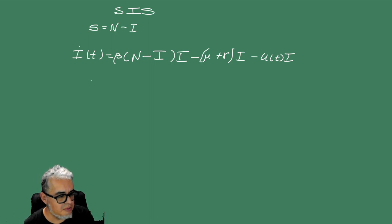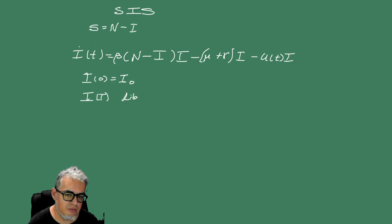Entonces, ¿cómo planteamos el problema de control? Aquí requeríamos una condición inicial, una condición de frontera. En este caso, pues la condición inicial es I de cero igual a algún valor inicial, y la condición de frontera es libre.